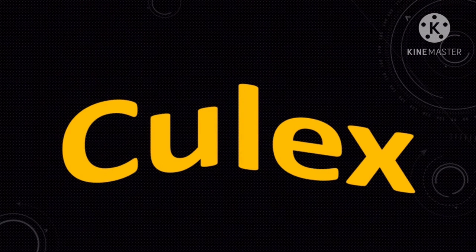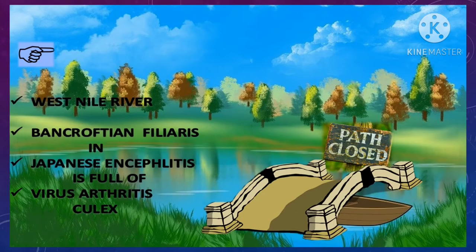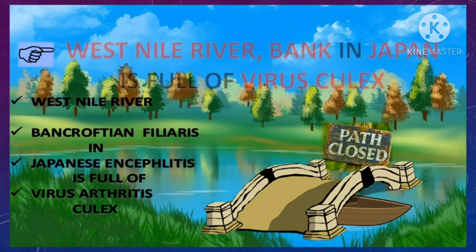The second type of mosquito responsible for causing human disease is the Culex. The diseases caused by Culex can be remembered by the mnemonic 'West Nile River Bank Japan Virus Culex.' West Nile stands for West Nile fever, Bank stands for Bancroftian filariasis, Japan stands for Japanese encephalitis, and Virus stands for viral arthritis.